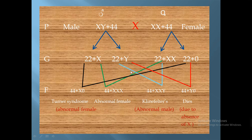Returning to the second type of sperm, 22 plus Y: if it fertilizes the abnormal ovum containing 22 plus XX, the result will be 44 plus XXY. The normal male contains 44 plus XY, so here we have an extra X chromosome, which leads to a syndrome called Klinefelter syndrome.